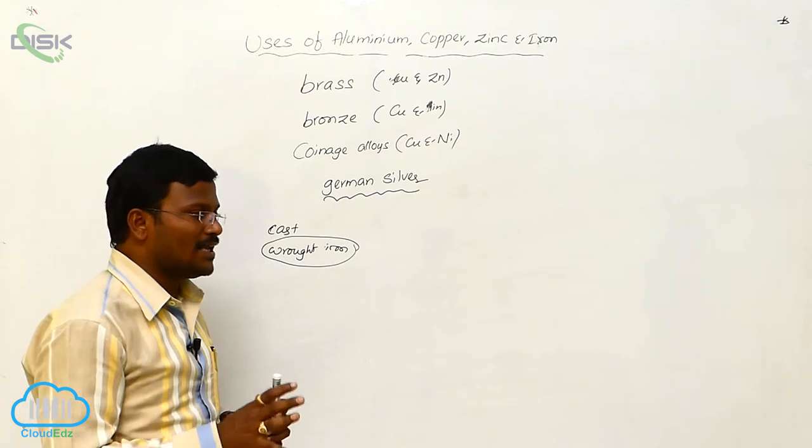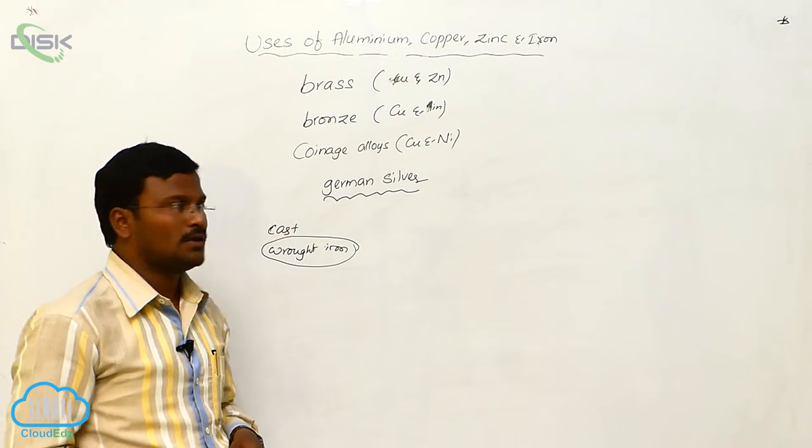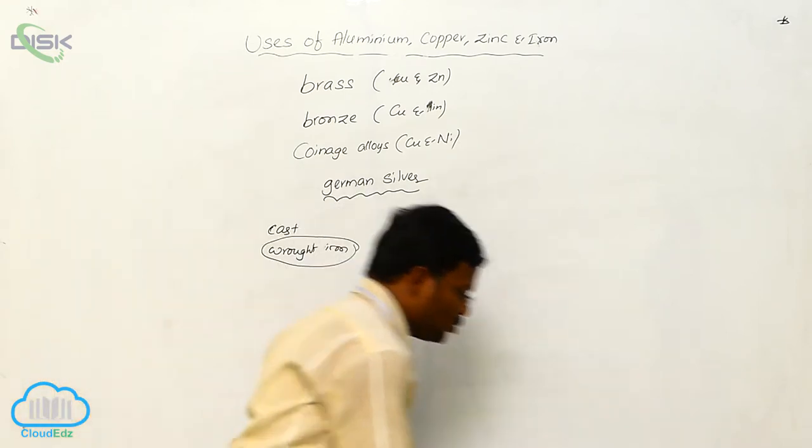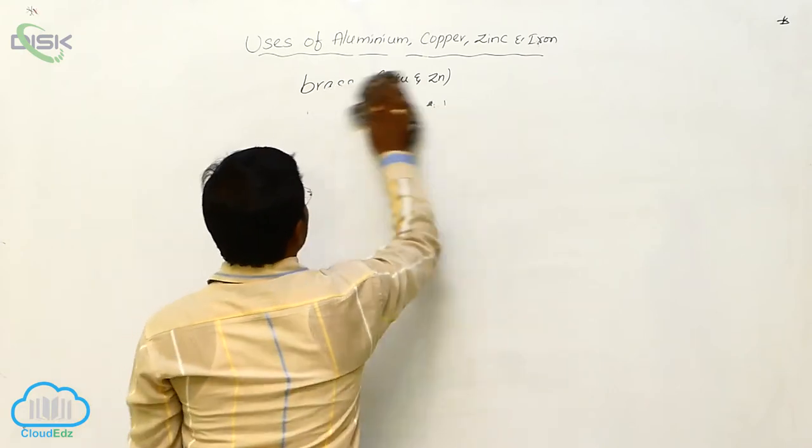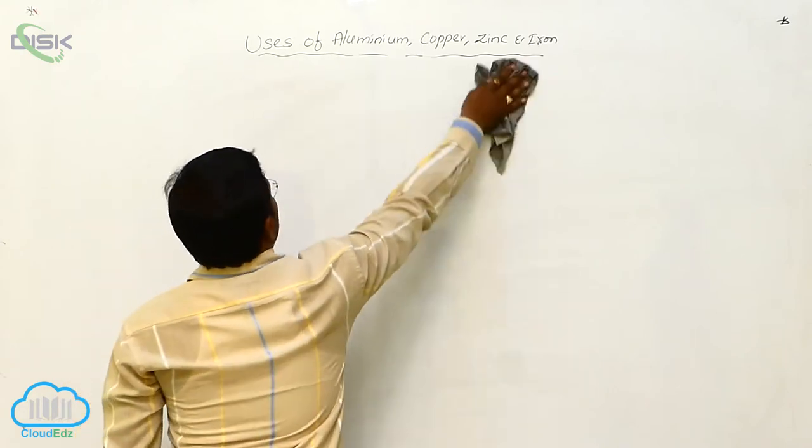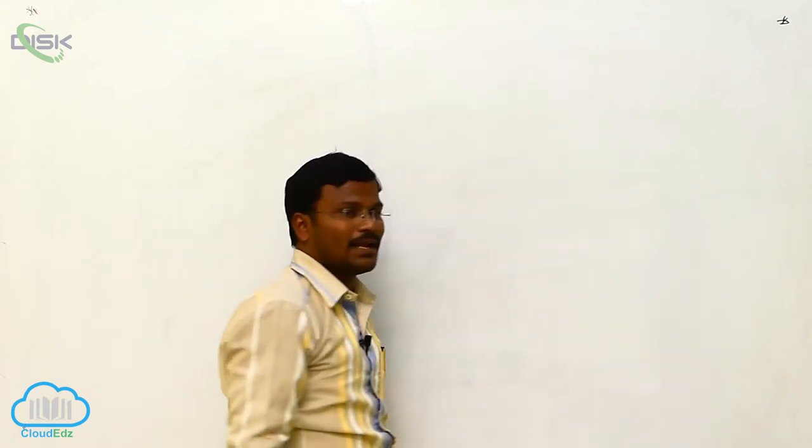So, these Steel and Stainless Steel utensils are used in our homes. This is about use of Aluminium, Copper, Zinc and Iron. With this, end of the topics related to principles of metallurgy.